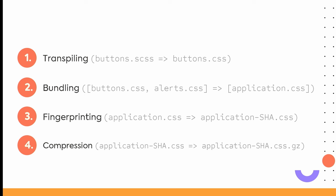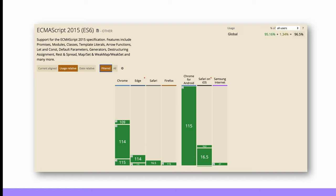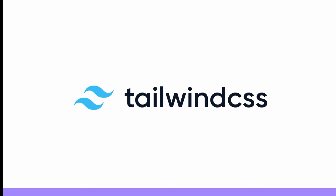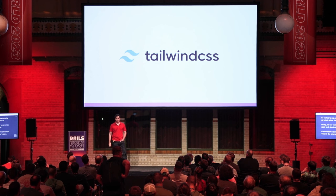So this is what the original asset pipeline looked like. What changed? Well, ES6 is here — everyone visiting your website is using a browser that supports it. We also saw the rise of utility-first CSS frameworks like Tailwind.